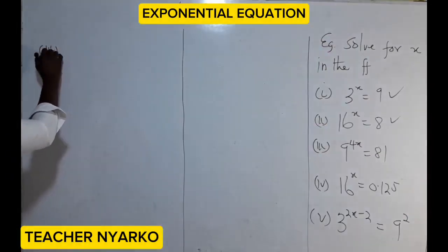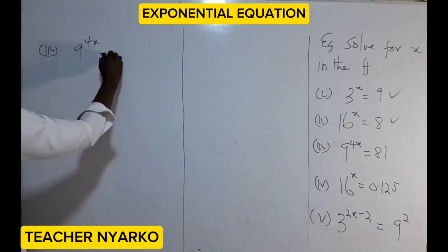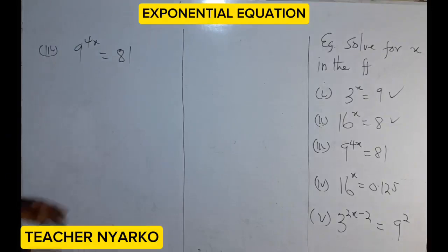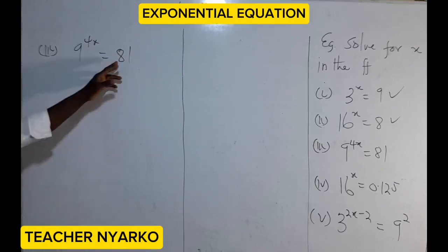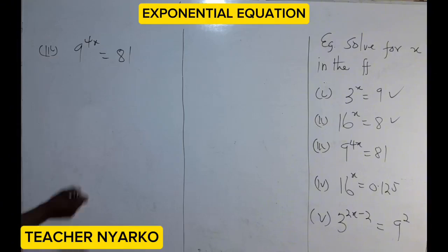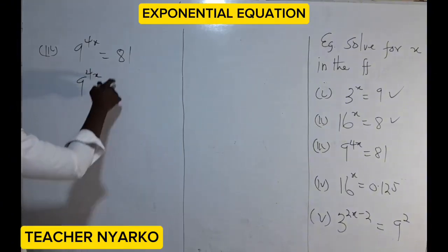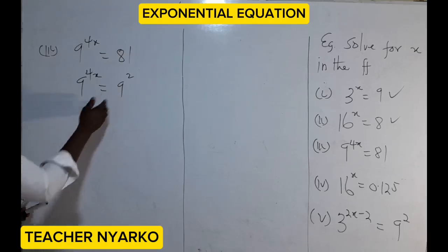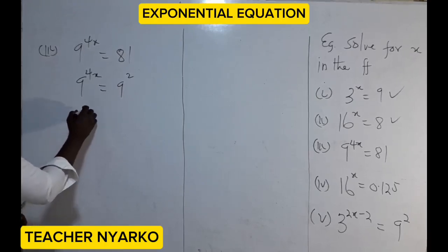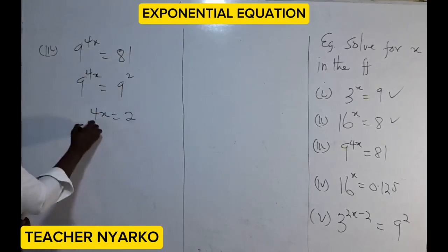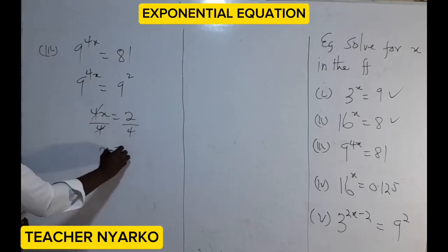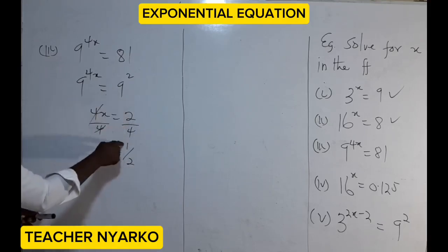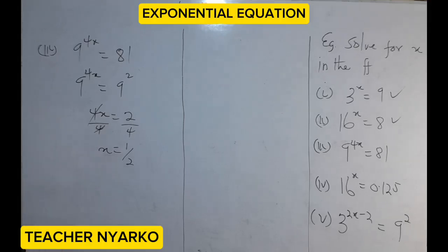The third question: 9 exponent 4x equals 81. We need a common base. Can we express 81 with base 9? Yes — 9 squared equals 81. So we have 9 exponent 4x equals 9 exponent 2. The bases are the same, so equate the exponents: 4x equals 2. Dividing both sides by 4, x equals 1 over 2, which is one half. Verification: 4 times one half equals 2, so 9 squared equals 81. Correct.